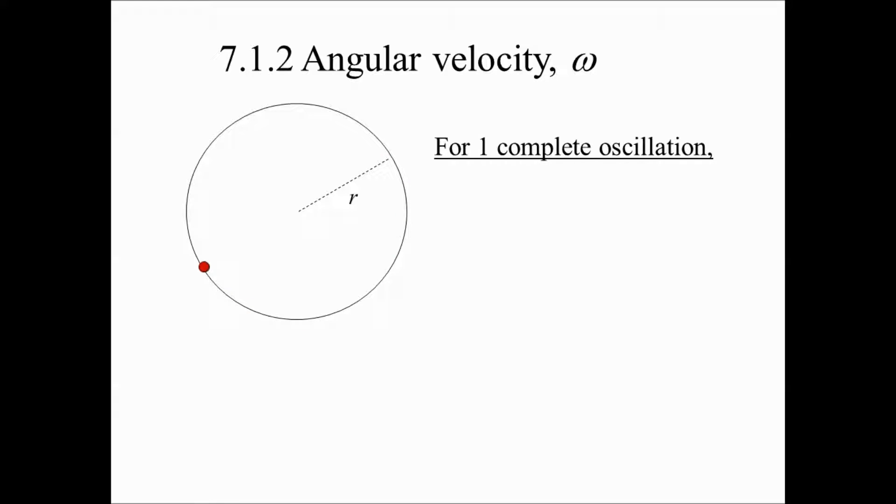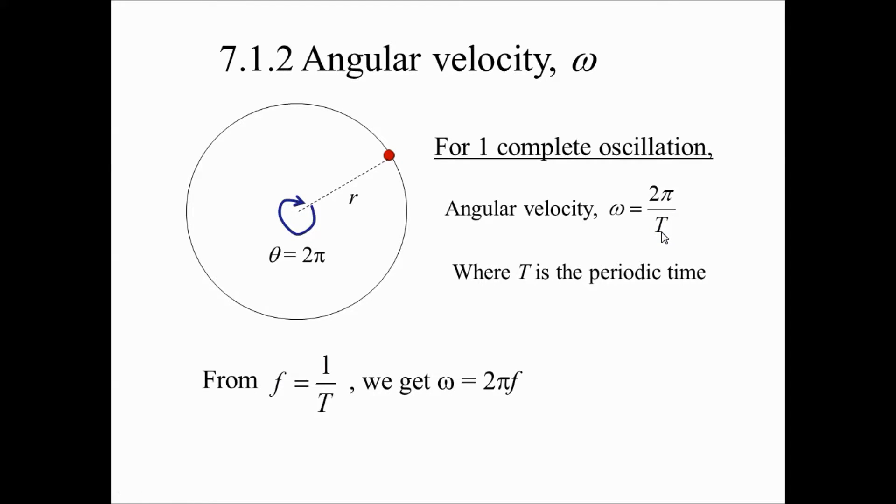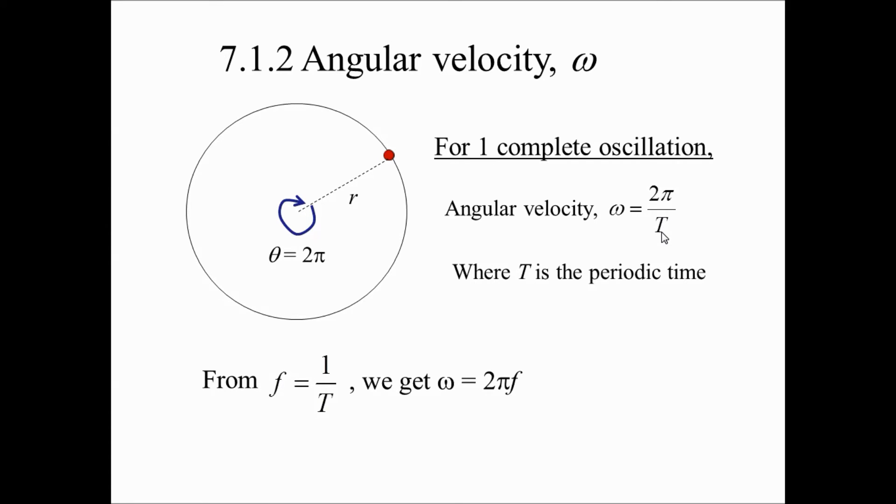Now, let's consider a particle going round in a circle. So for one complete oscillation, the angular velocity will be equal to omega d theta over dt, where d theta here is the angle subscribed which is 2 pi, and t is the periodic time. From frequency equals to 1 over t, we get the formula omega equals to 2 pi f.